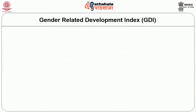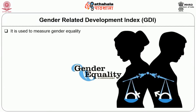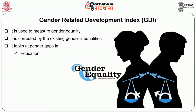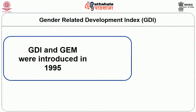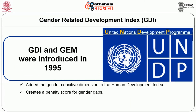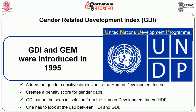Next is the Gender-Related Development Index, GDI — a human development index used to measure gender equality. GDI is corrected by gender inequalities, looking at gender gaps in education, school enrolment, adult literacy, life expectancy and income. GDI and GEM were introduced in 1995 by UNDP in the Human Development Report. GDI creates a penalty score for gender gaps and cannot be seen in isolation from the Human Development Index, HDI — one has to look at the gap between HDI and GDI.